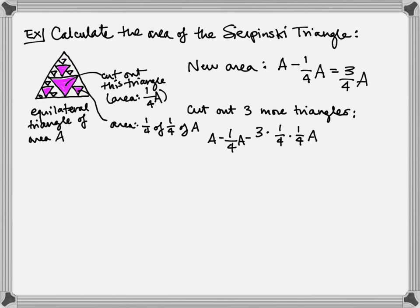And let's do it again. So we cut out a bunch of these little guys, and each one of those has area one-fourth of one-sixteenth of A. And if I count up, I have nine of those. So I keep doing this same sort of calculation. So I take my total area A, I subtract a fourth of A, I subtract one-fourth times three-fourths of A, I subtract one-fourth times three-fourths times three-fourths of A.